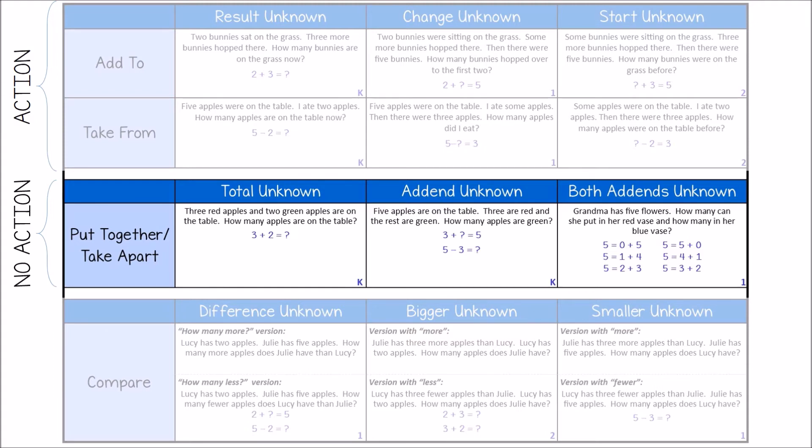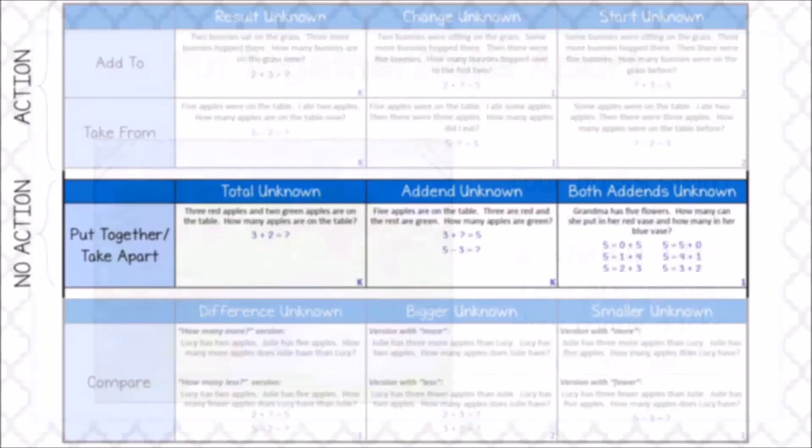There are really two types of problems here. The first is where the problem provides the parts and we're finding the whole amount. The second is where the problem provides the whole amount and we must find one or both of the parts. Although these problems do not involve an action, they may still typically be modeled with manipulatives.